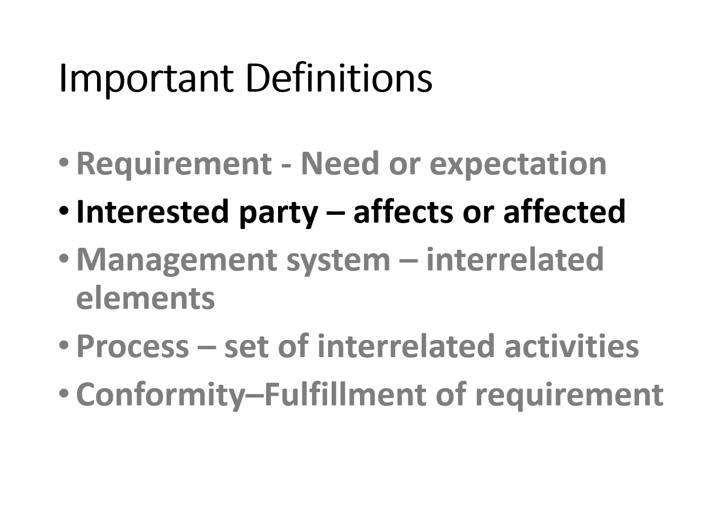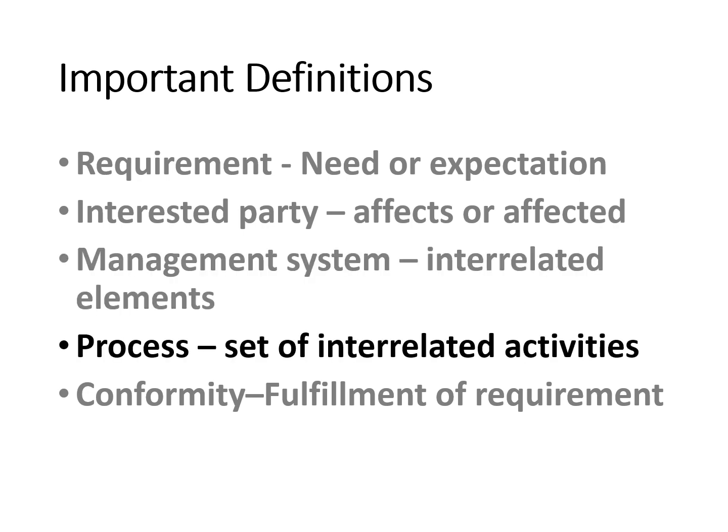Interested parties may also be perceived to be affected by the organization. Management systems are a set of interrelated or interacting elements of an organization used to frame policies, establish and implement processes, and achieve the set objectives. A process is a set of interrelated or interacting activities that converts inputs to desired outputs. Conformity refers to products, services, or systems that have been assessed against and meet the requirements of one or more established ISO standards.